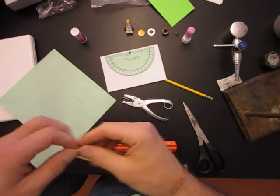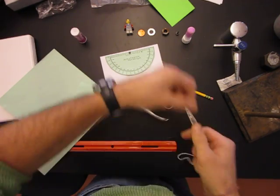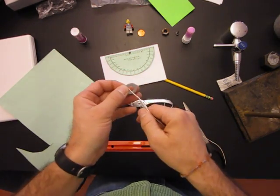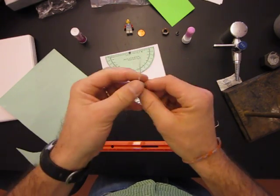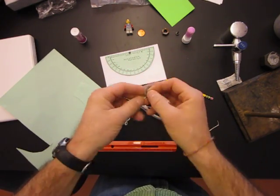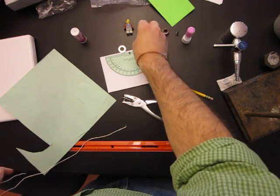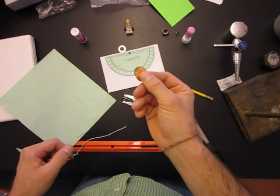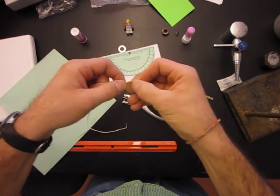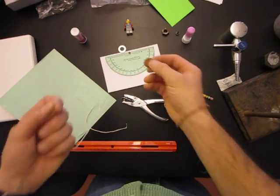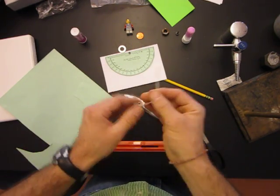Now is where the string and the weight comes in. So, you can take a weight, like a washer that has a hole in the middle, and tie a string to it, or you can take a penny, or a nickel, or any coin really, and use tape to attach it to the end of this string. Either one works, it doesn't really matter that much.